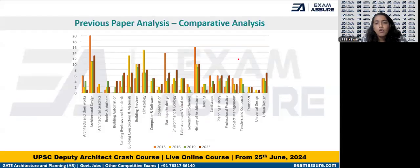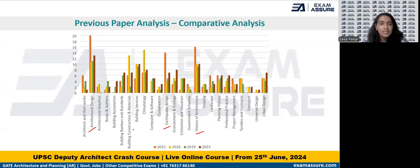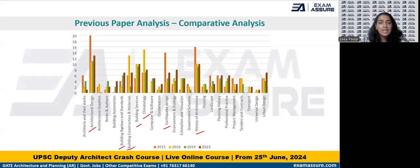If I do a comparative analysis of all four years, we see that a majority of questions — or more weightage — has been given to subjects like architectural design, history of architecture, earthquake-resistant structures, building construction materials, climatology, services, building bylaws and standards, and the National Building Code. From this analysis, it is clear that more weightage has been given to these subjects.